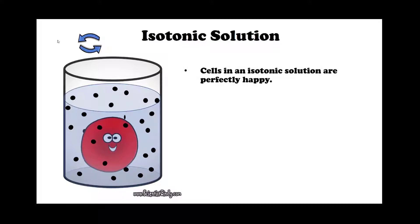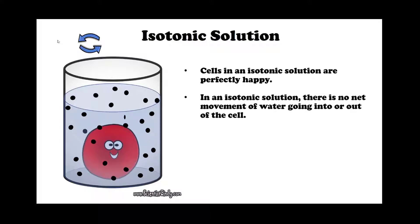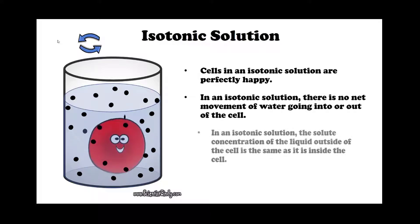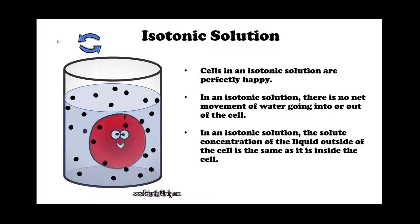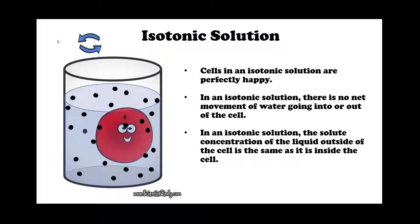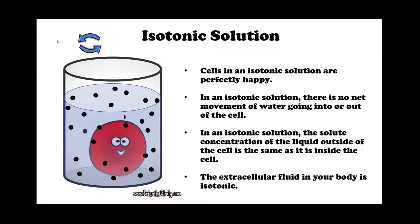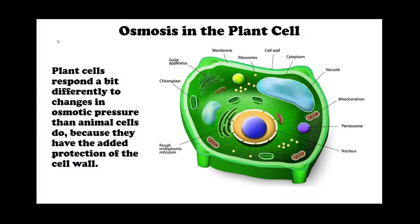Cells in an isotonic solution are perfectly happy. In an isotonic solution, there is no net movement of water going into or out of the cell. The solute concentration of liquid outside of the cell is the same as it is inside of the cell. The extracellular fluid in your body is isotonic. Plant cells respond a bit differently to changes in osmotic pressure than animal cells do, because they have the added protection of the cell wall.